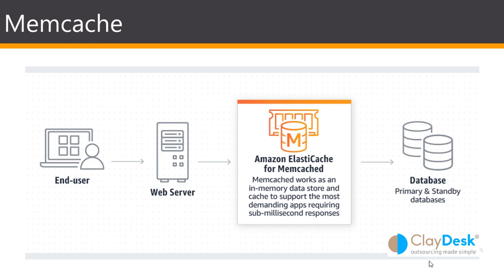For Memcached, the two main use cases are caching and session store. Session stores are easy to create with Memcached — you can use the hash table provided by Memcached, which can be distributed across multiple nodes. Scaling the session store is as easy as adding a node and updating the clients to take advantage of the new node. The architecture places Memcached as an in-memory data store between the web server and the database.